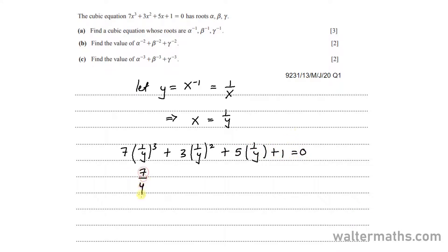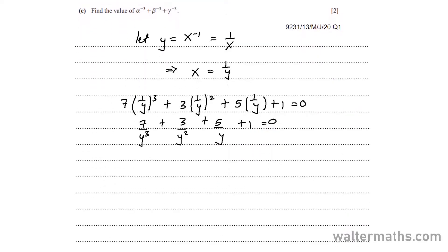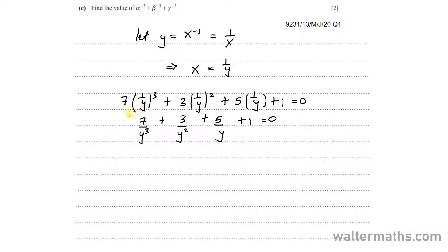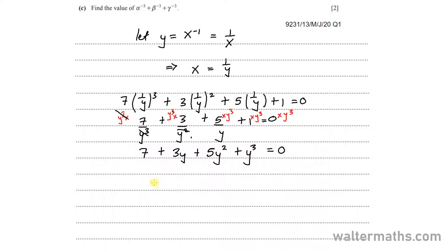That's 7 over y cubed plus 3 over y squared plus 5 over y plus 1 equal to 0. Here I can multiply all terms by y cubed. So I get 7, then 3y, then 5y squared, plus y cubed equal to 0. Rearranging, that's y cubed plus 5y squared plus 3y plus 7 equal to 0. This is the answer to part A.